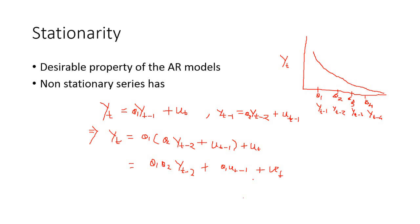That is where we need the concept of stationarity. Stationarity is a very important and desirable property of the AR model — it requires that the series is stationary. The series for which we are doing forecasting should be a stationary series; otherwise forecasting is not possible. Non-stationary series create problems for the AR model. In a separate lecture we will see how to forecast a non-stationary series, or how to convert it to a stationary series and then use the AR model.